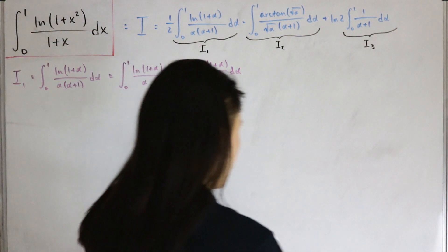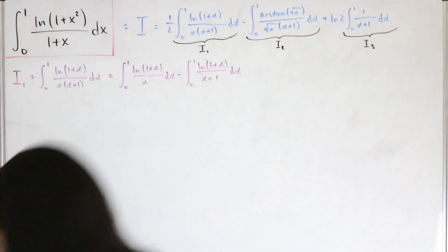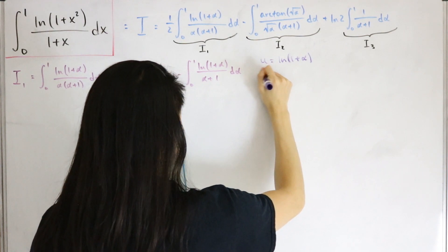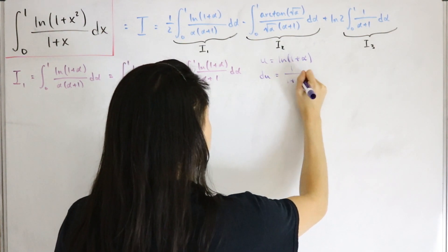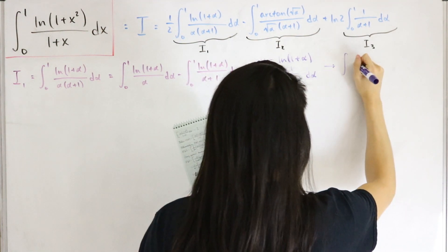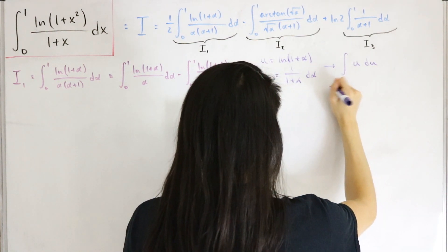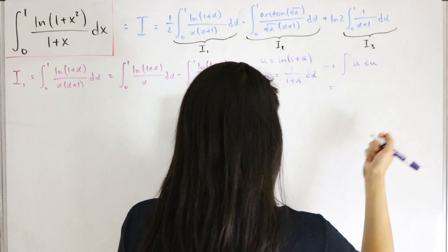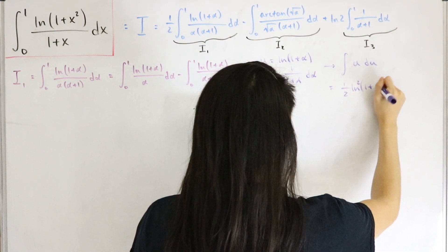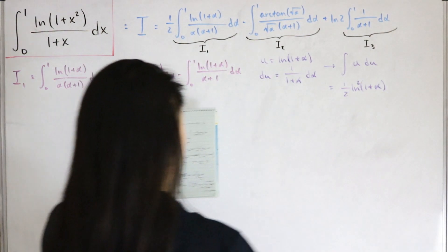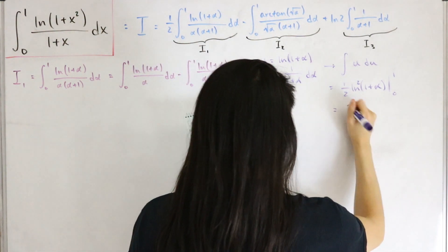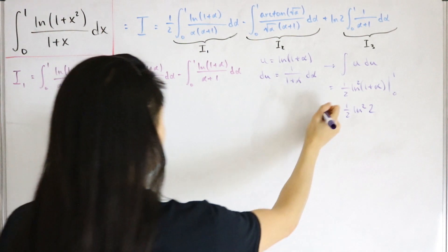The second integral is easier. We use u-substitution: let u = ln(1+α), so du = 1/(1+α) dα. This becomes the integral of u du, which gives (1/2)u², or (1/2)ln²(1+α). Evaluating from zero to one: plugging in zero gives zero, and plugging in one gives (1/2)ln²(2).